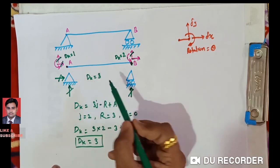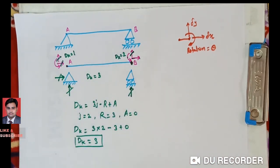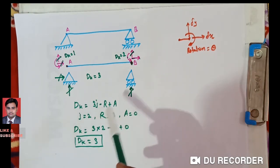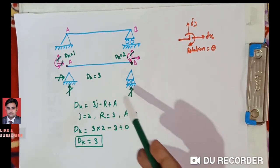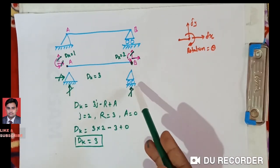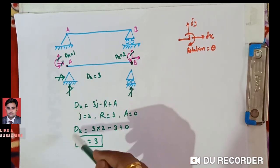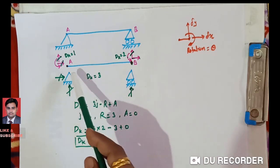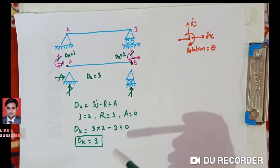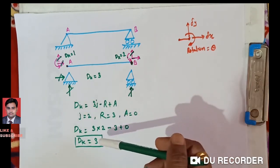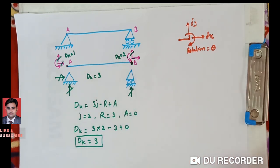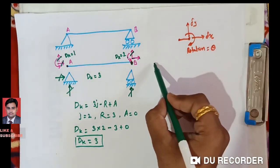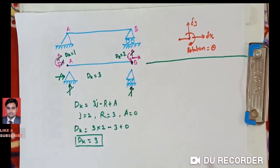My advice is to use the direct method rather than the formula, but in this lecture I will show both approaches. Now I will tell you the degree of freedom at each joint when different types of supports are attached.